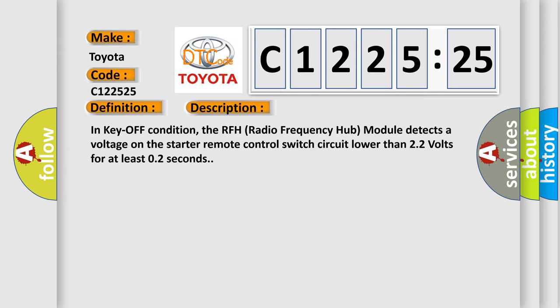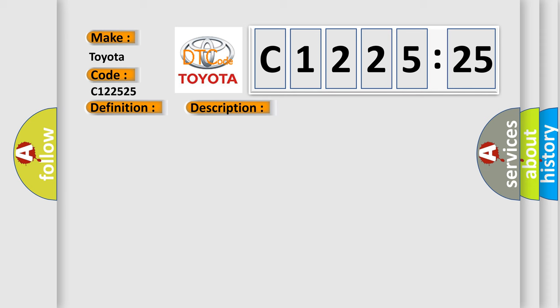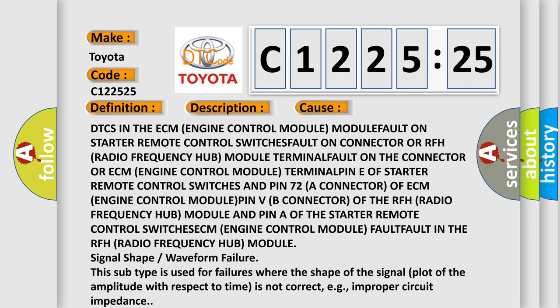In key-off condition, the RFH (Radio Frequency Hub) module detects a voltage on the starter remote control switch circuit lower than 2.2 volts for at least 0.2 seconds. This diagnostic error occurs most often in these cases.